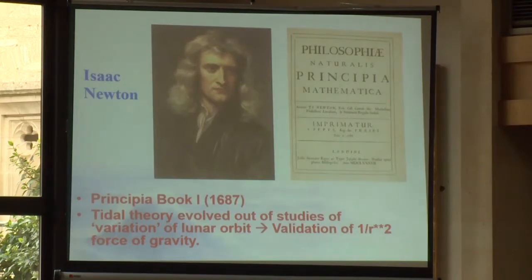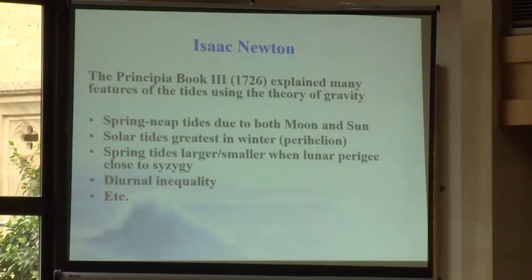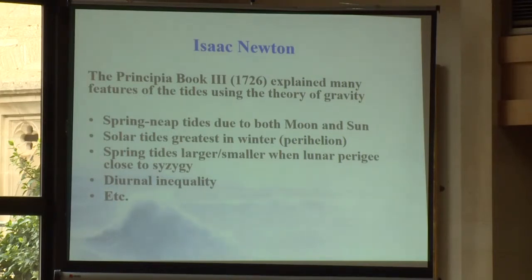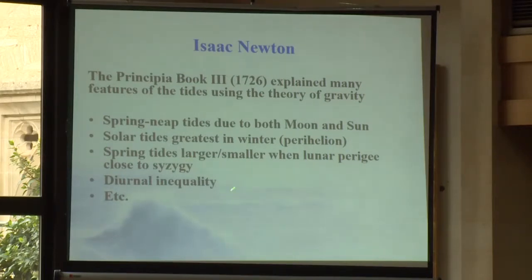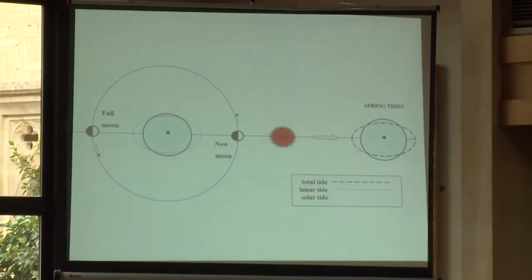So we skip to the great man — Newton — who revolutionised things totally, especially by explaining gravity. We have to wait until the third book of the Principia, in 1726, which has all the tides in it. What it described was why we have spring and neap tides due to both the moon and sun in combination; that solar tides are biggest in winter when the Earth is closest to the sun at perihelion; that spring tides are larger when lunar perigee is close to syzygy — when the perigee lines up with the moon, sun, and earth lining up, which is what happened last Monday. He also described the diurnal inequality due to the moon's declination.